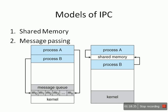There are two models of IPC: shared memory and message passing. In the shared memory model, as shown in the right-hand side figure, there are two processes — process A and process B — in the memory architecture. A common shared memory space is created by the kernel at the user level, and these two processes communicate through this shared memory by putting and reading messages from it.